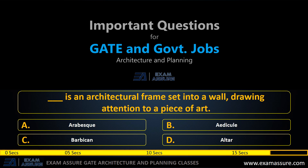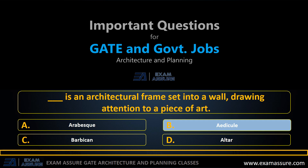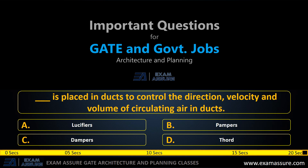Next question: What is an architectural frame set into a wall drawing attention to a piece of art? Option A: arabesque cube, option B: aedicule, option C: barbican, option D: altar. The correct answer is option B, aedicule.